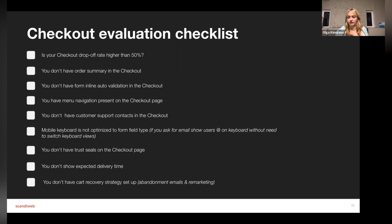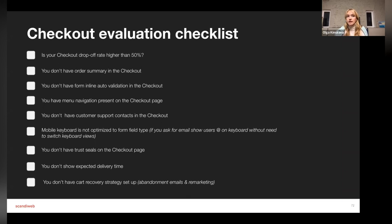The second case study involved optimizing a one-page checkout — mainly ensuring form fields were optimized and there were no technical issues. The checkout conversion rate increased by six percent, there were 18 percent more transactions, and checkout errors decreased by 60 percent, showing how usability directly affects conversion. When we calculated the revenue impact, we saw it could bring almost half a million in additional annual revenue for that business. There's also a quick checklist: check if your drop-off rate is above 50 percent, verify you have order summary, inline auto-validation, enclosed checkout, user support, mobile-optimized keyboard, trust seals, expected delivery time, and a proper recovery strategy.